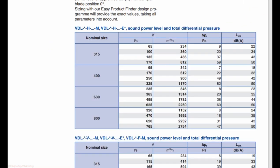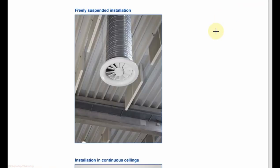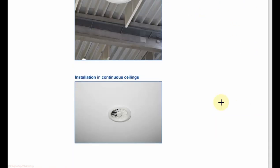To select the swirl ceiling diffuser, there are different tables according to the models. In the table, the first column shows the nominal diameter of the diffuser, followed by airflow in liters per second and sound level. First select the airflow, then check the NC level — if acceptable, finalize; if not, go to the next size. The swirl diffuser can be installed in different ways: with a plenum, freely suspended, or with a false ceiling.